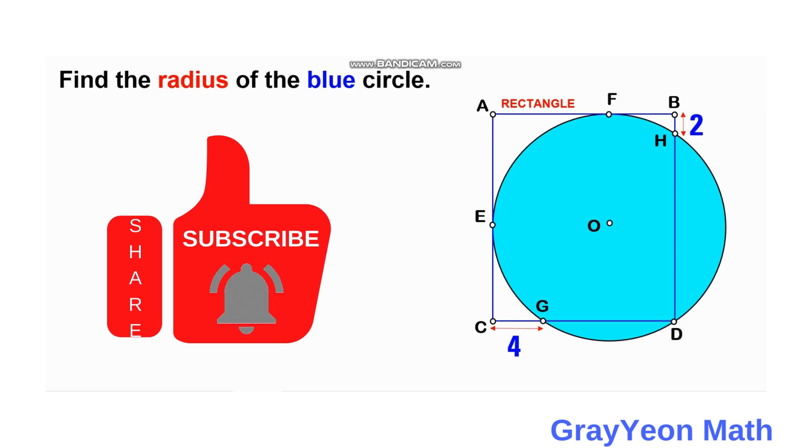...to B the length is 2 units, and from the point of intersection at C to G the length of the segment is 4 units. We are required to find the radius of this blue circle.